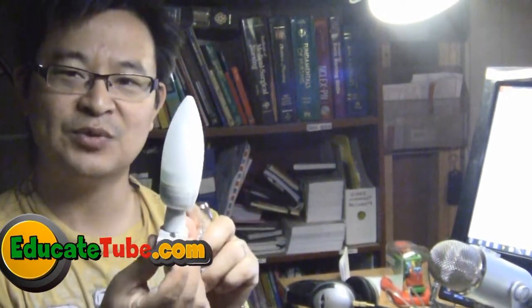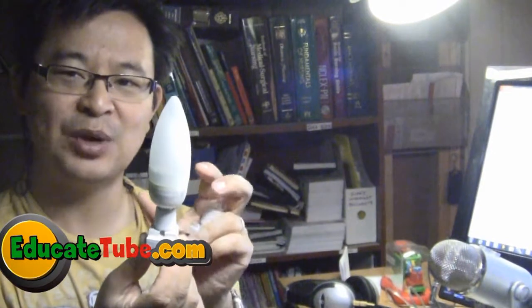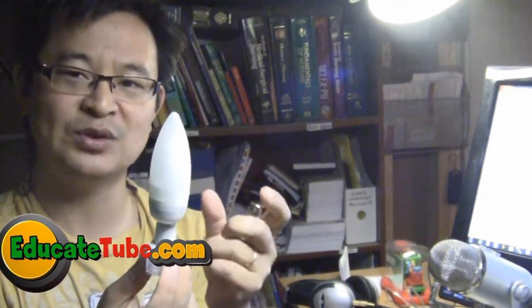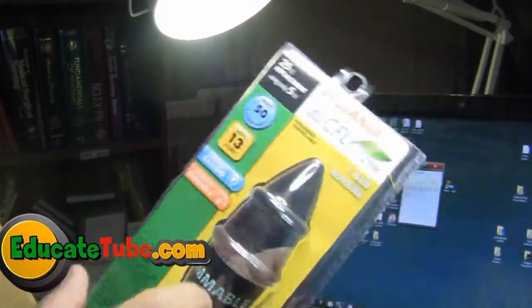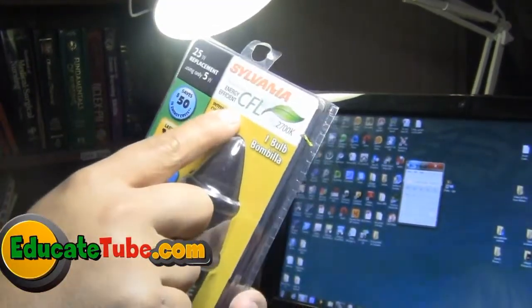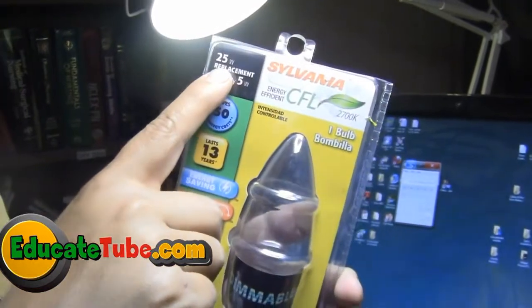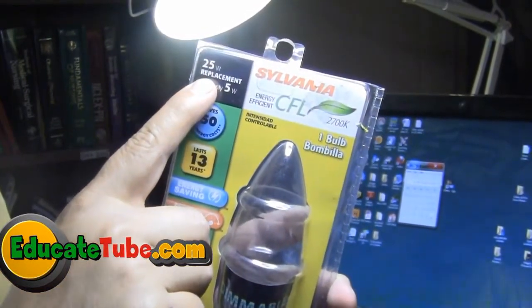It is a 5 watt, runs on 5 watt power, but the brightness is about 25 watt, equivalent to a 25 watt incandescent light bulb. You can see the light bulb, this is a compact fluorescent light bulb. It replaces a 25 watt incandescent light bulb.